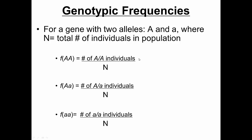Let's run through some mathematical formulas. In any problem we do in this lecture, we're going to assume we're dealing with one gene with two alleles: big A is one allele and little a is the other. The total number of individuals in the population is N. If we want to find the frequency of homozygous dominant individuals, it's a simple formula: the number of homozygous dominant individuals divided by the total. Just like in a classroom, if you wanted to know the frequency of female students, you'd divide the number of females by the total number of students.